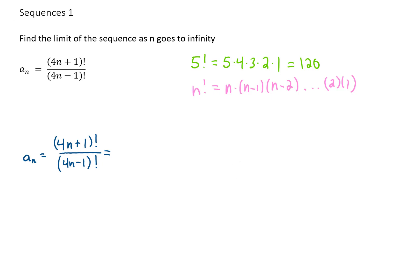So let's rewrite the numerator. If we have 4n plus 1 factorial, we could write that as 4n plus 1 times 4n plus 1 minus 1, which is just 4n, times 4n minus 1, times 4n minus 1 minus another 1, which is 4n minus 2, and so on.